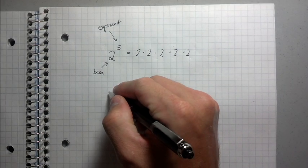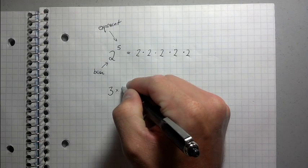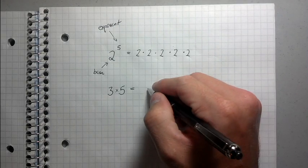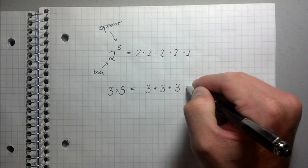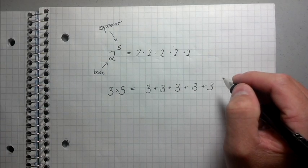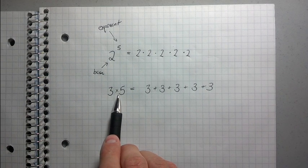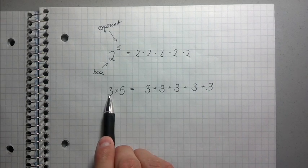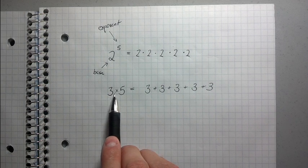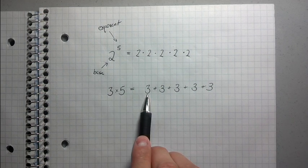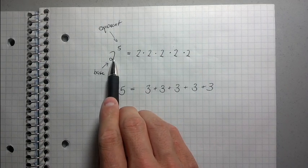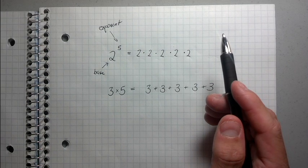Think about this for a second. What if I had something like 3 times 5? Doesn't 3 times 5 mean 3 plus 3 plus 3 plus 3 plus 3? It does, doesn't it? So you can think of it as: multiplication is telling you to add a number to itself a bunch of times. So if I go 3 times 5, I'm saying add 3 five times. Exponents are just telling you to multiply a number a bunch of times. There's a neat little relationship there.